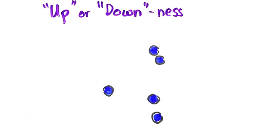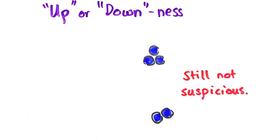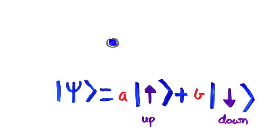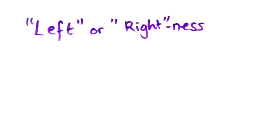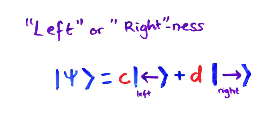When you measure it, every particle is either up or down, so in general quantum mechanics tells us that they're in a superposition. But there's another property of a particle that you can measure, called its left or rightness, and similarly the particle can be in a superposition of left and right.